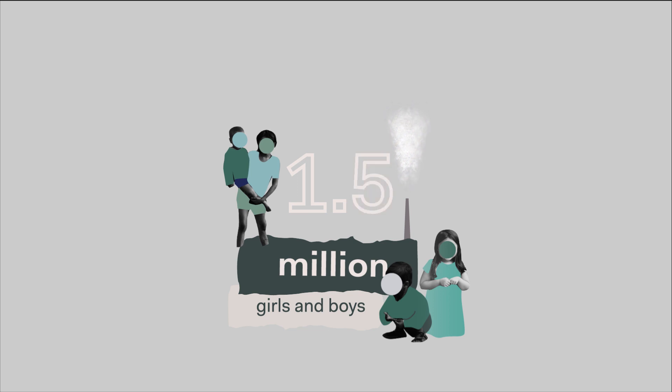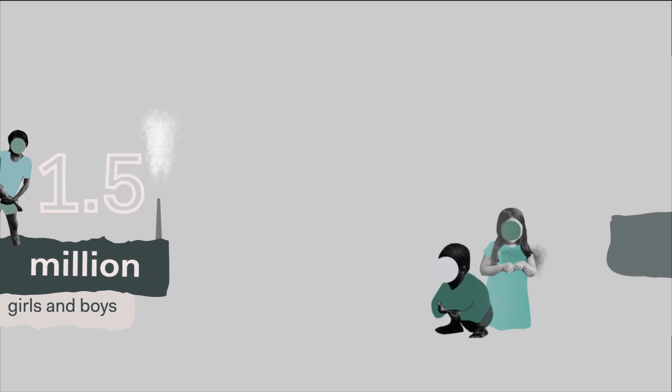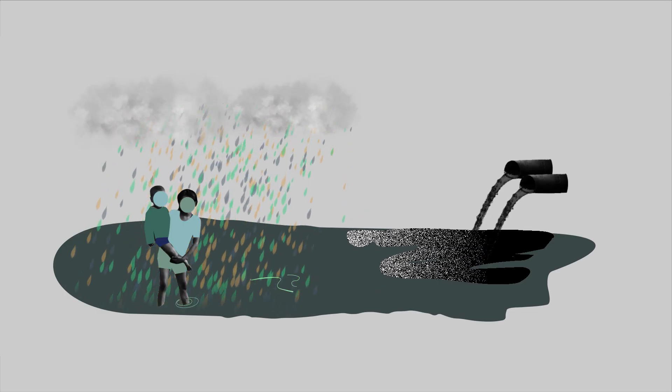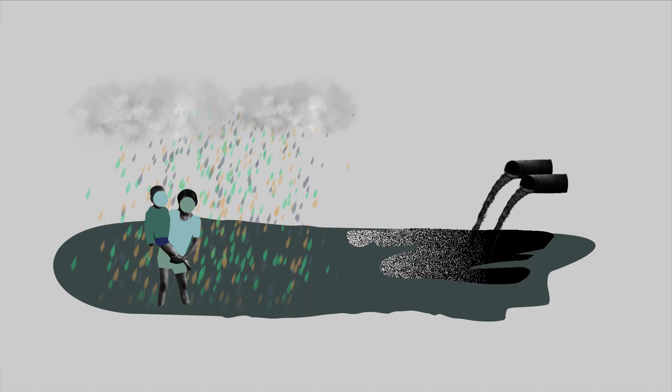Every year, 1.5 million children under the age of five die as a result of air pollution, water pollution, exposure to toxic substances and other types of environmental harm.